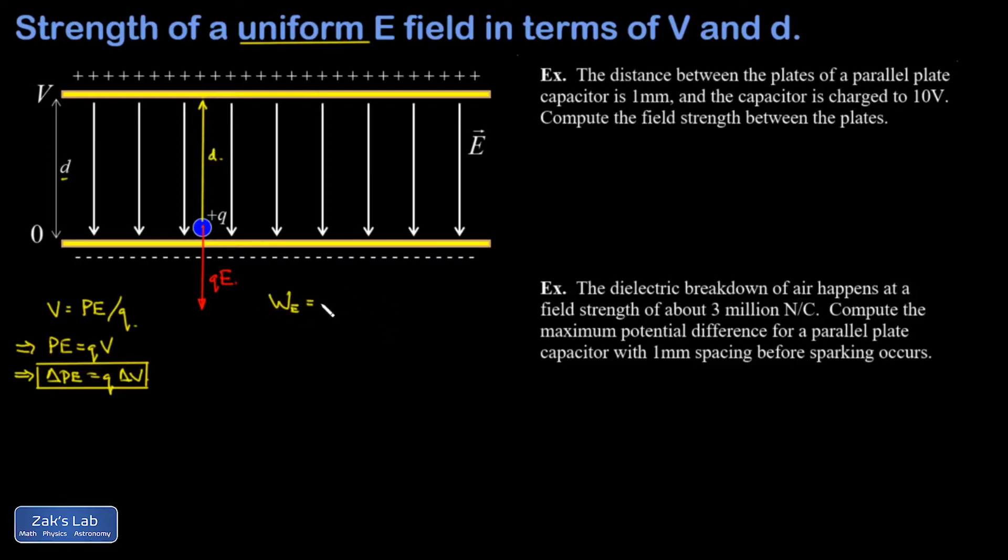Because the electric force points opposite to the displacement vector, the work has a minus sign, giving us negative QED. Next, remember the general relationship between work done by a conservative force (and the electrical force is a conservative force) and the change in potential energy. The work done by a conservative force is the negative of the change in potential energy.